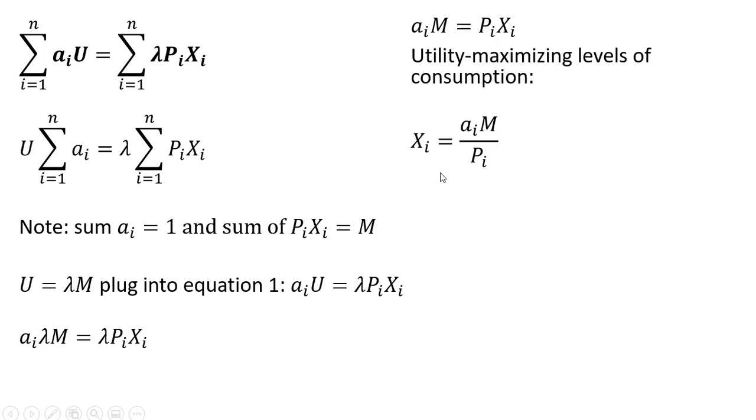And that'll be our demand for good x, our Marshallian demand for good x. So if we want the demand for good x subscript 1, good x subscript 2, good x subscript n, it would take on this form here, where we got the exponent on that good being multiplied by the money income in the numerator and the respective price in the denominator.